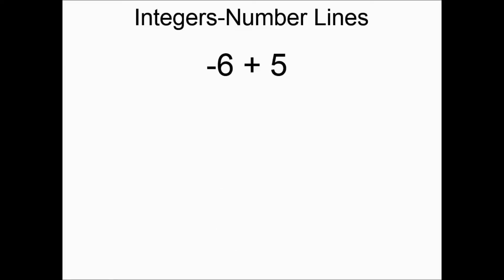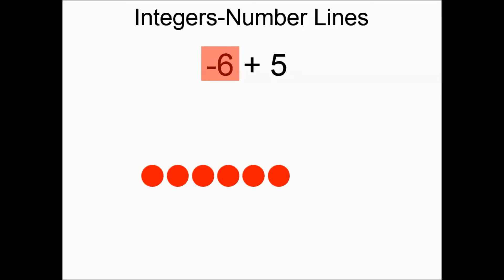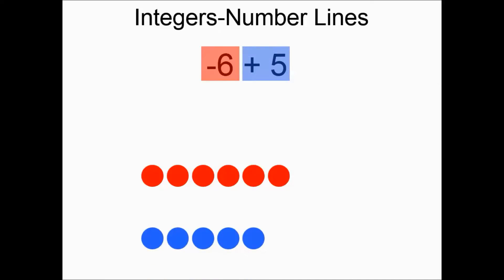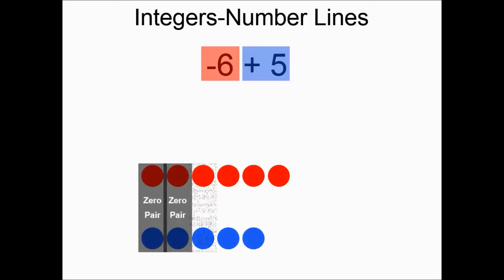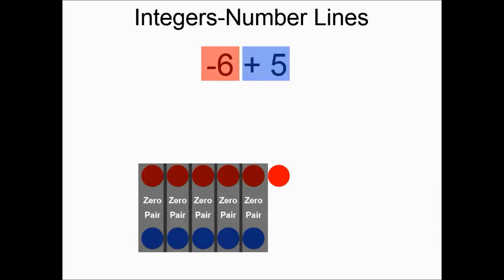Negative six plus five: we have six negative chips and five positive chips. We have five zero pairs, which leaves us with one negative chip left over, so the answer is negative one.